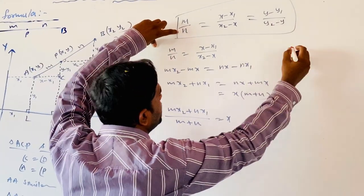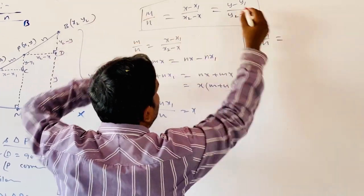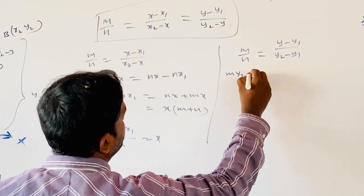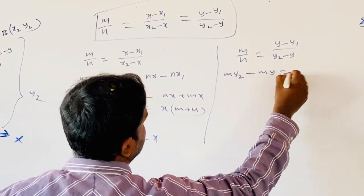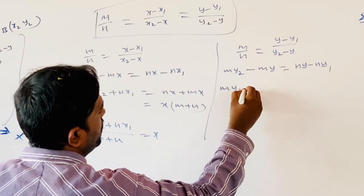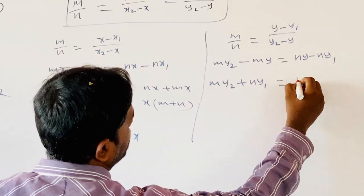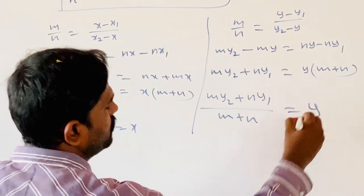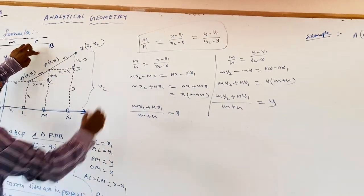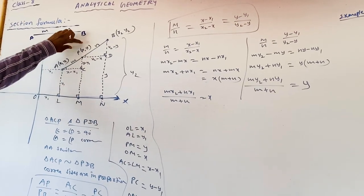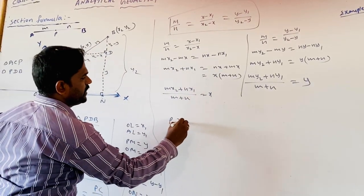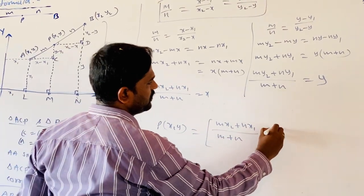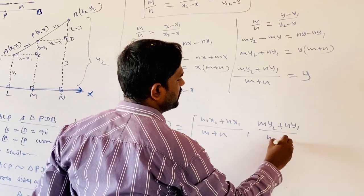Similarly, by taking the first and third conditions, M by N equals Y minus Y1 by Y2 minus Y. By cross multiplication: MY2 minus MY equals NY minus NY1. Transposing: MY2 plus NY1 equals Y into M plus N. Therefore Y equals MY2 plus NY1 by M plus N, which is the Y coordinate of P. So the coordinates of point P dividing AB in the ratio M is to N are: P(X, Y) equals MX2 plus NX1 by M plus N, comma MY2 plus NY1 by M plus N.